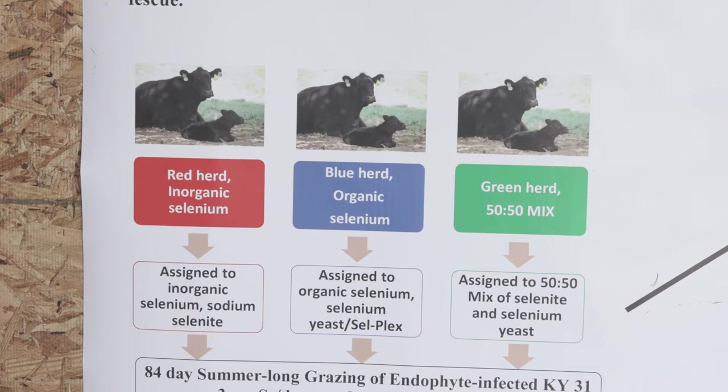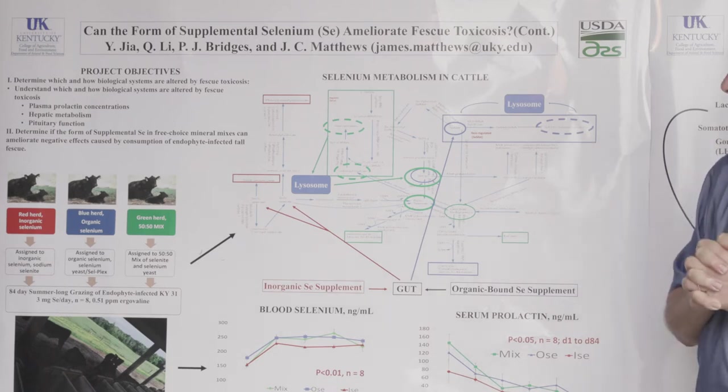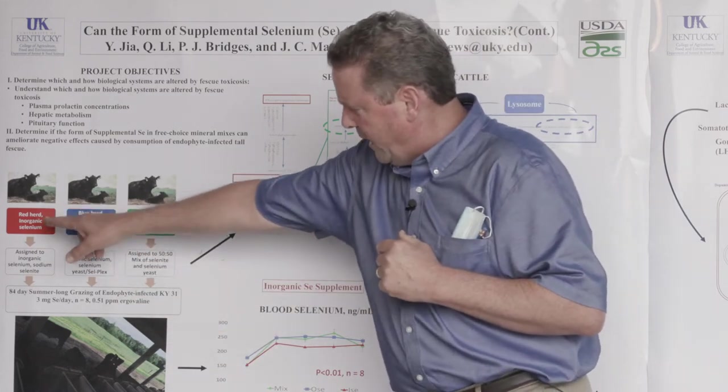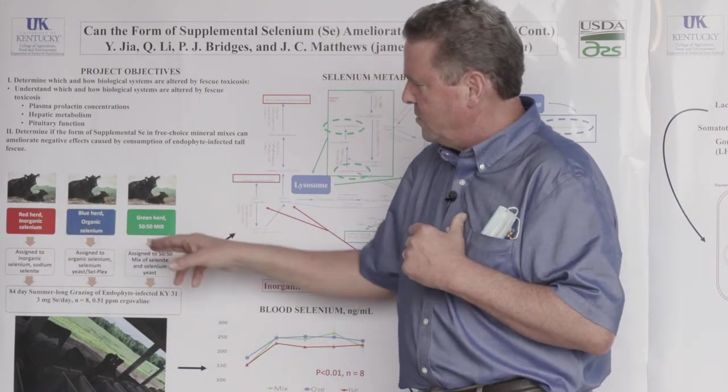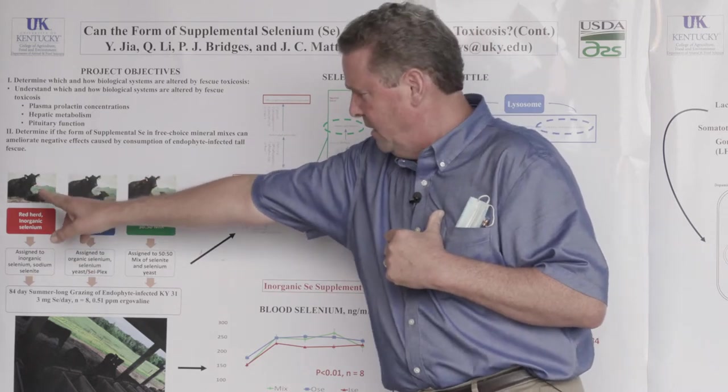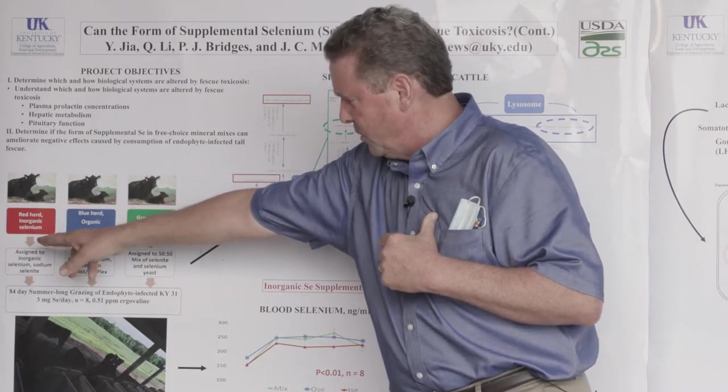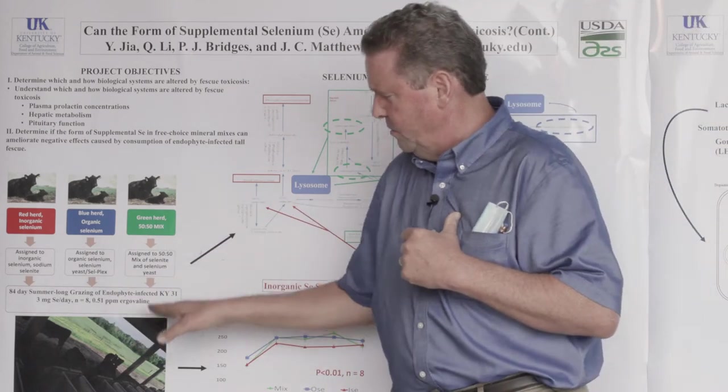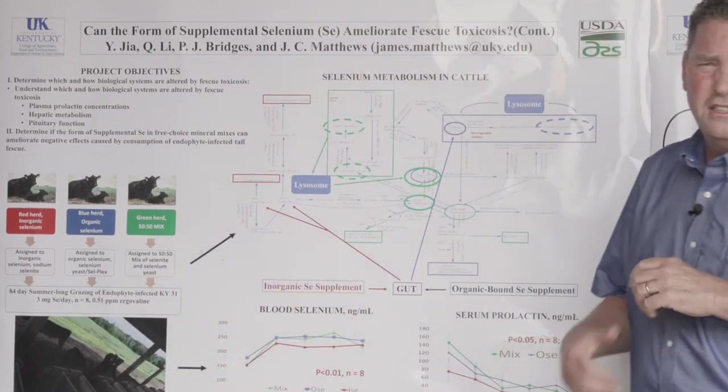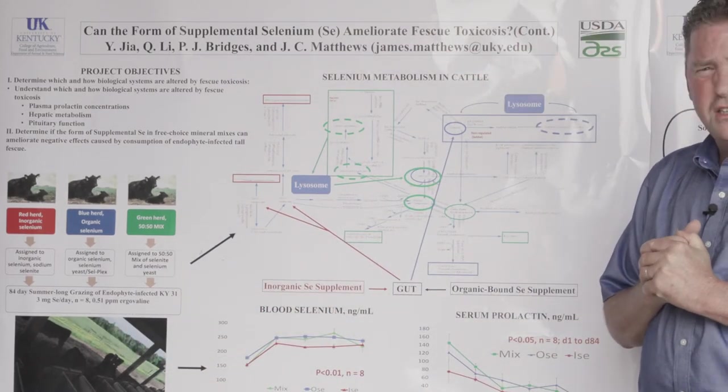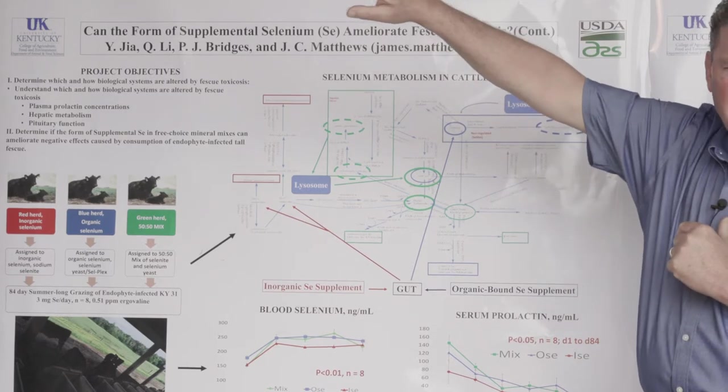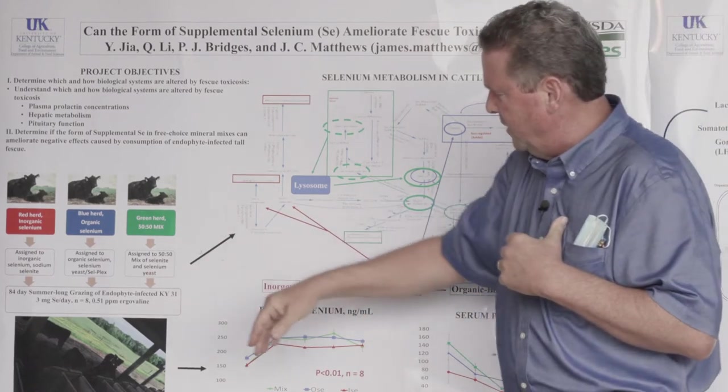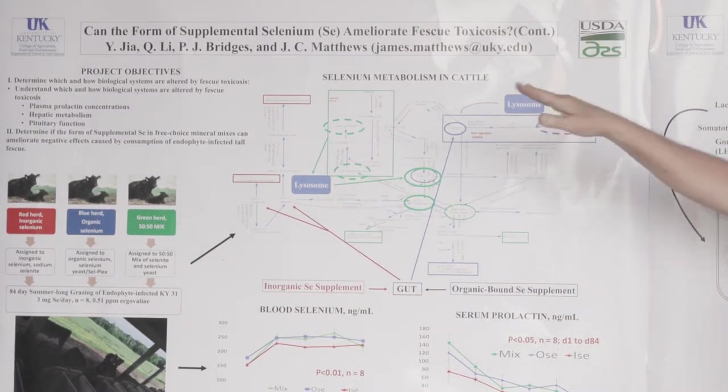As you know from previous talks, we've seen some differences in controlled studies. This trial was set up to allow us to look at what happens to calves taken from each of these three herds, so they were conceived and grew up on inorganic versus organic versus the mix, and see how they respond to a common challenge of grazing an endophyte-infected tall fescue pasture. When we do this, we need to really think about what's going on in the biochemistry of the animal.